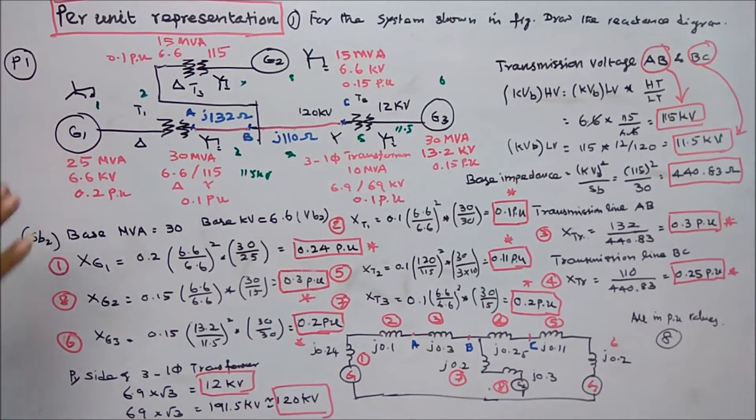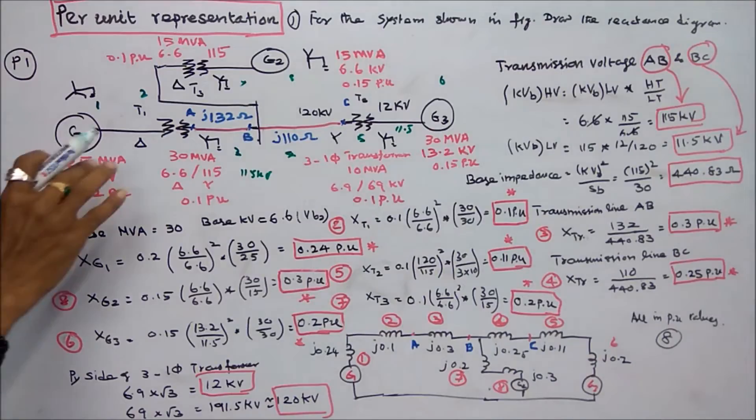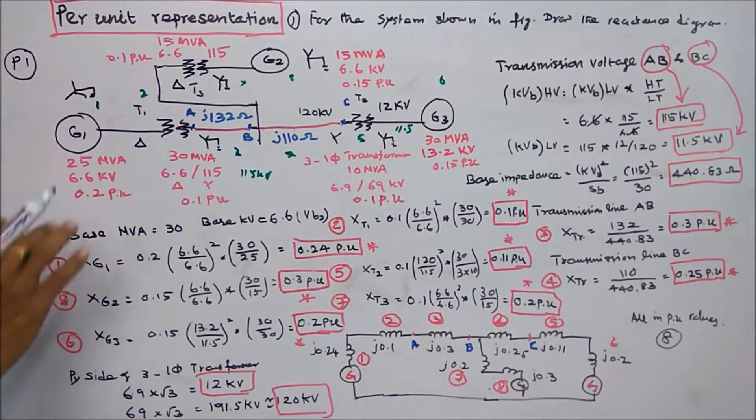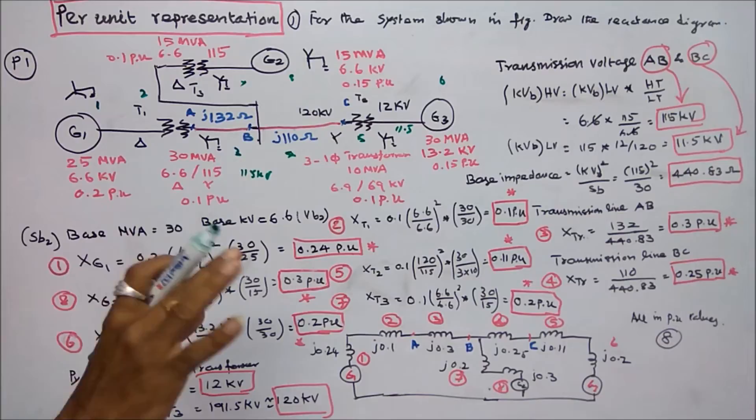Component one is a generator. Its rating is 25 MVA, 6.6 kV. Reactance is 0.2 per unit.